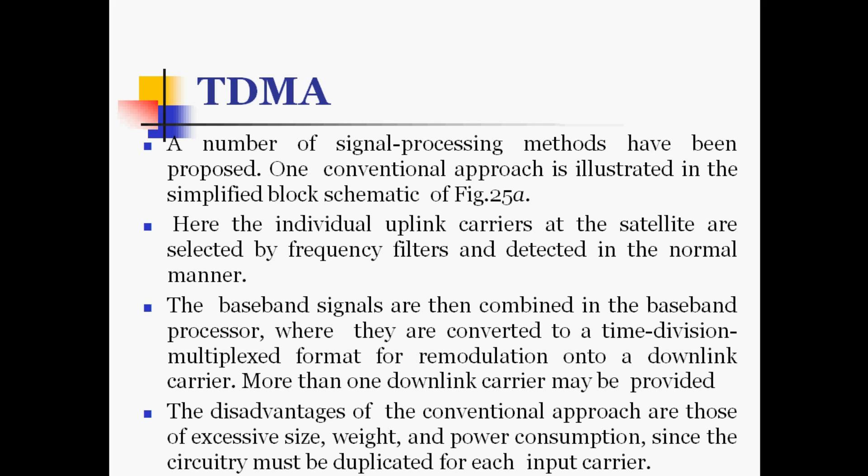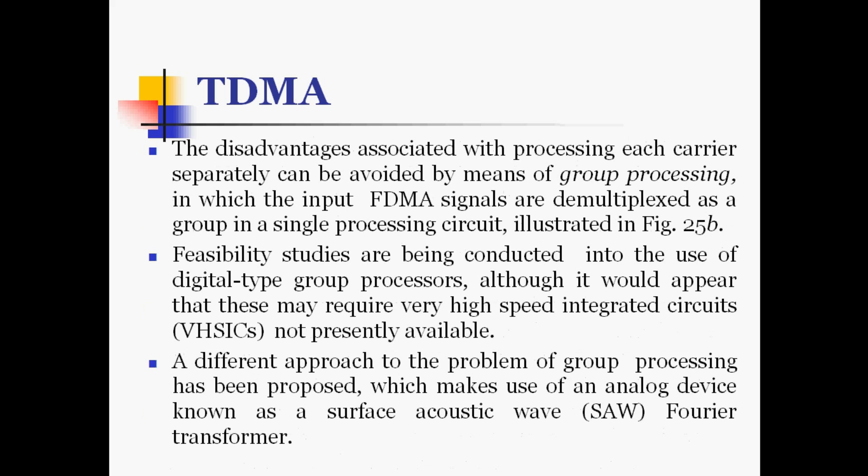The disadvantages of the conventional approach are excessive size, weight, and power consumption, since the circuitry must be duplicated for each input carrier. The disadvantages of processing each carrier separately can be avoided by means of group processing, in which the input FDMA signals are demultiplexed as a group in a single processing circuit. Feasibility studies are being conducted into digital type group processors, though these may require very high speed integrated circuits. A different approach proposes using an analog device known as a surface acoustic wave (SAW) Fourier transformer.